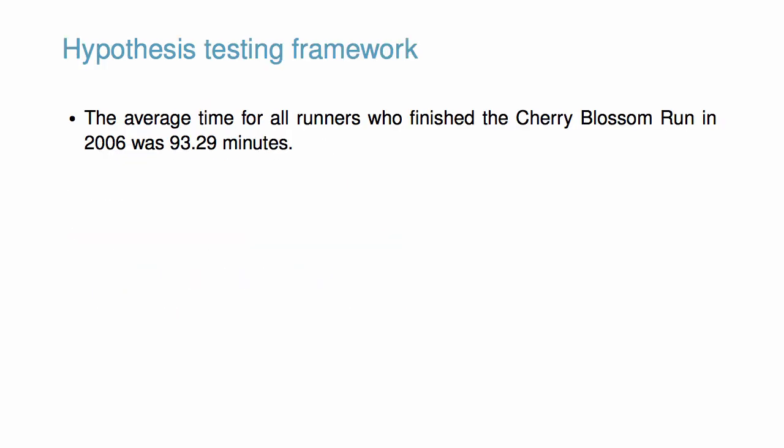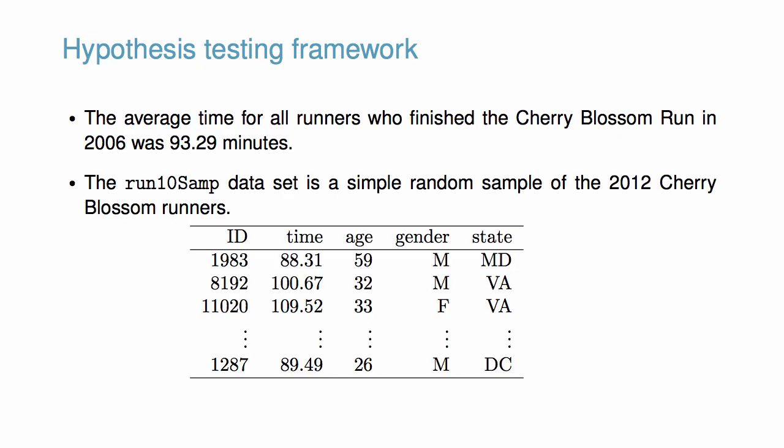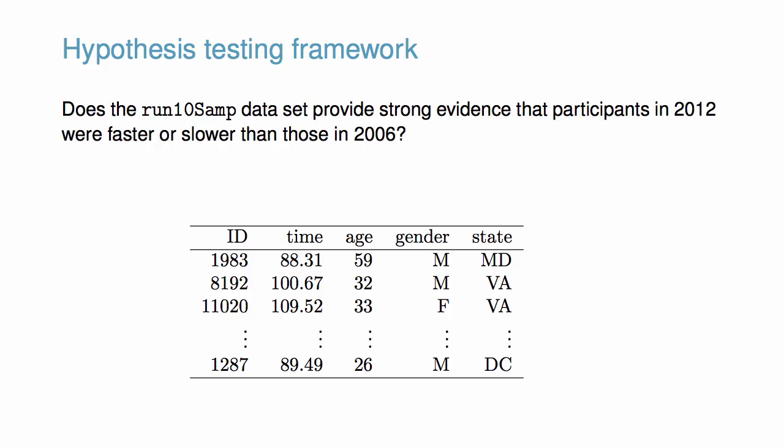The average time for all runners who finished the Washington DC Cherry Blossom race in 2006 was 93.29 minutes. We have data regarding the finishing times of the 2012 Cherry Blossom run participants. Do the data provide evidence that the participants in 2012 were faster or slower than those in 2006?